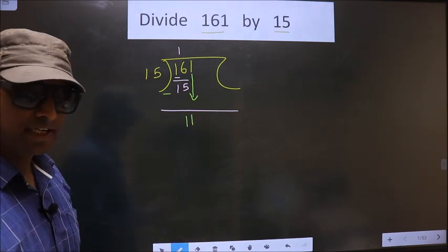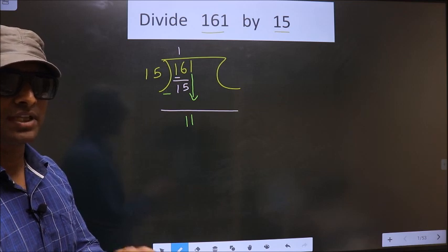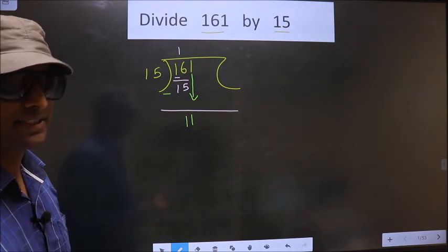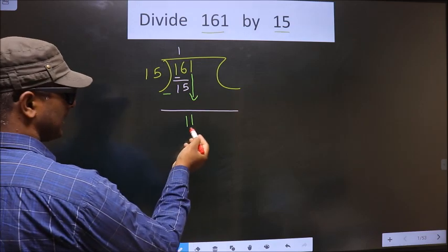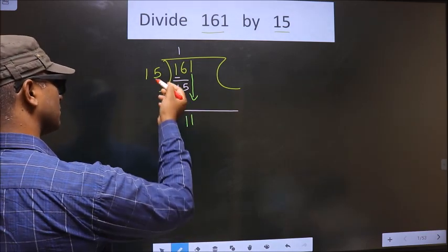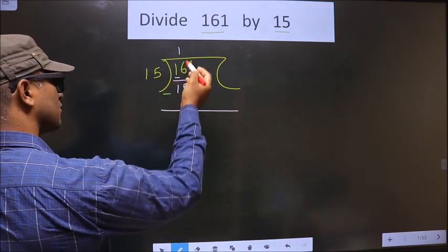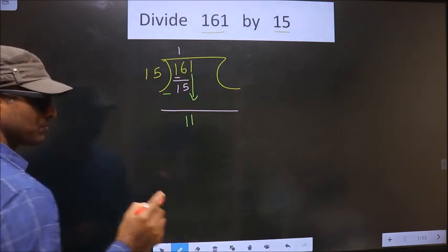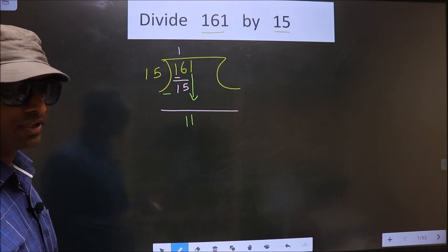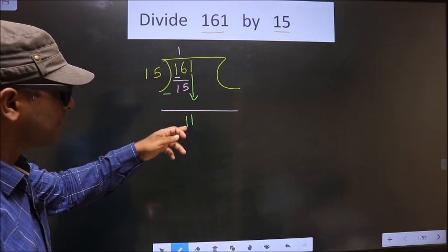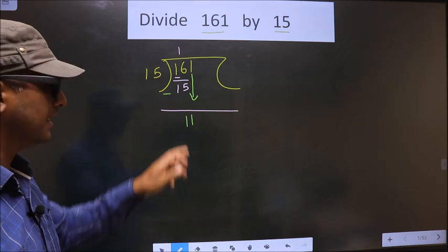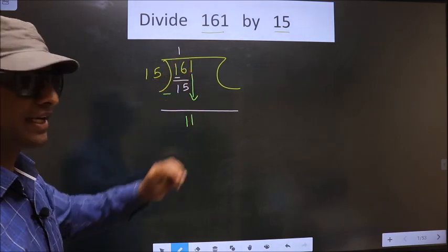Till here clear. This is where many do the mistake. What mistake do they do? See, here we have 11. 11 is smaller than 15. So they directly take point and take 0 here, which is wrong. You brought one number down. That's it for that step. Here itself you cannot take decimal and 0 here.